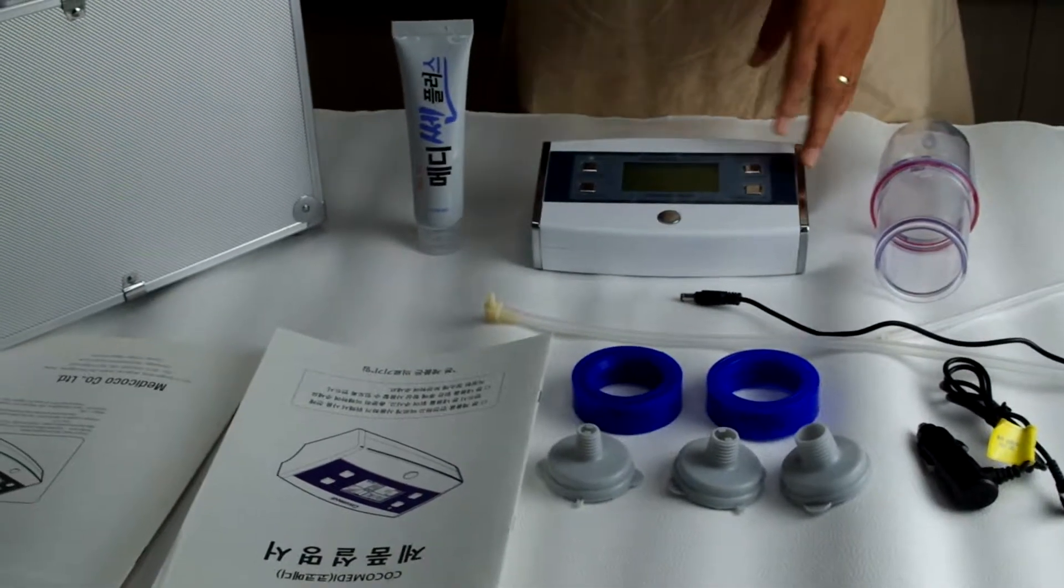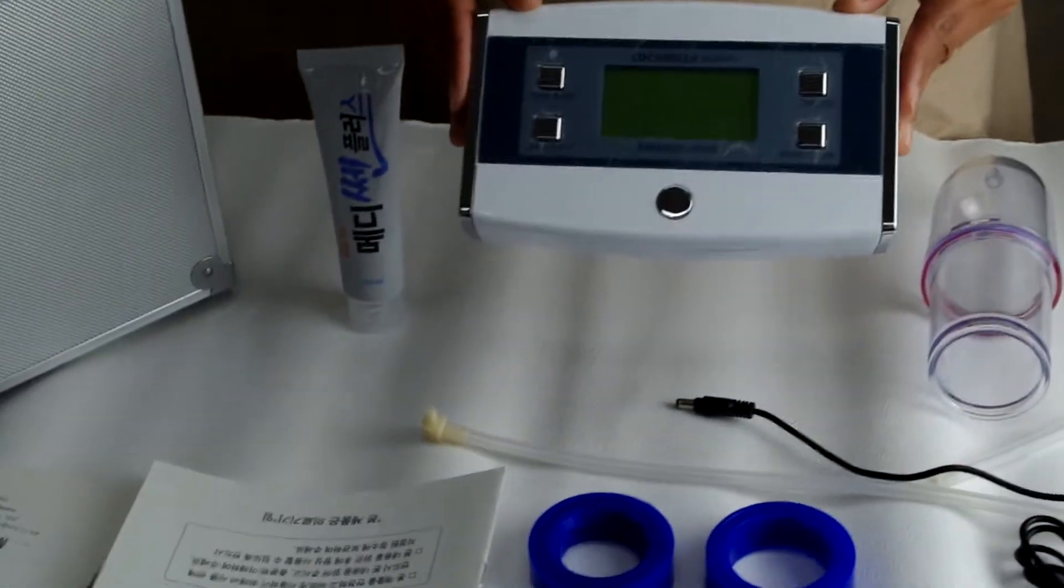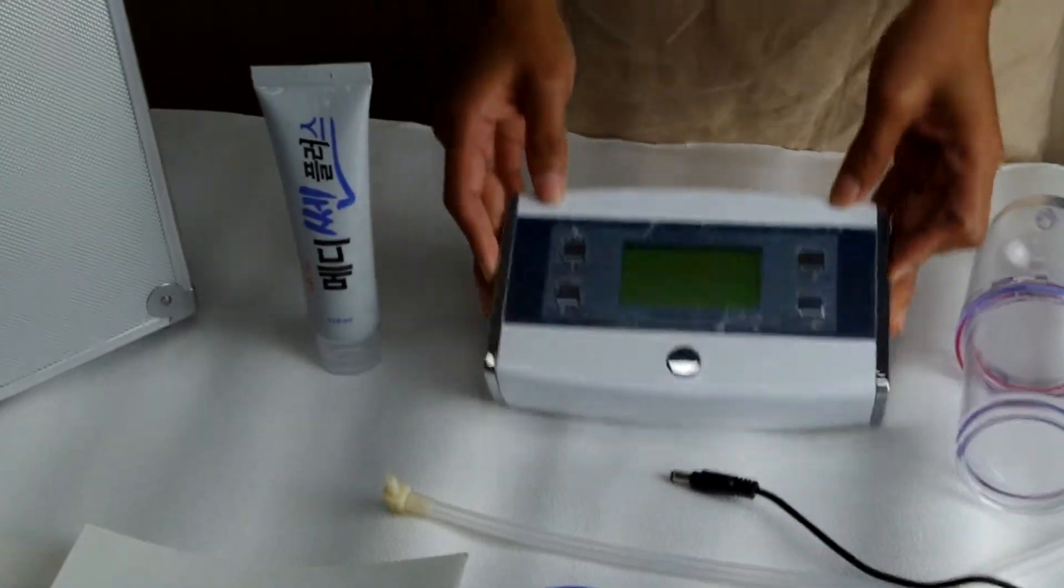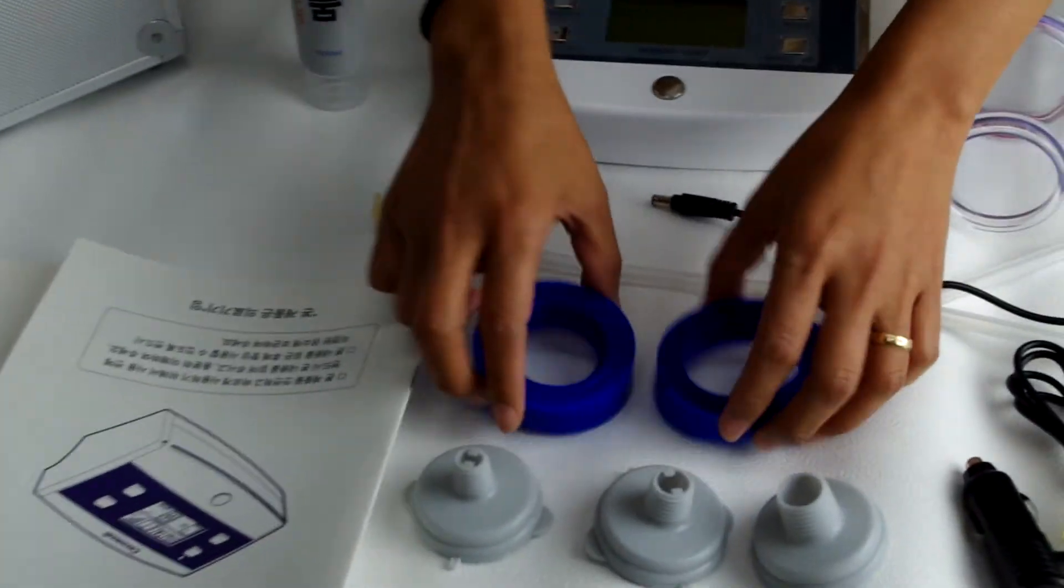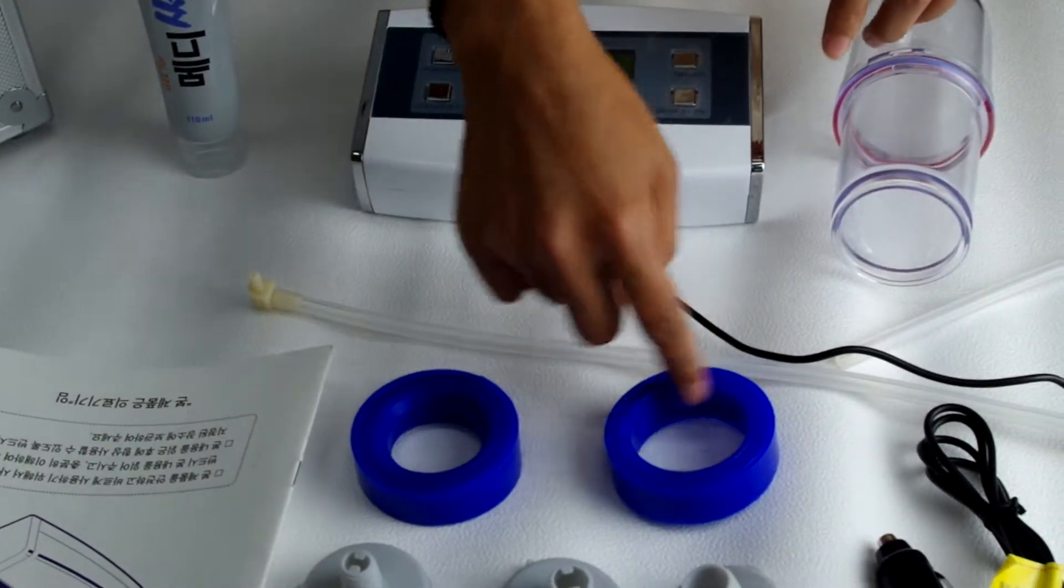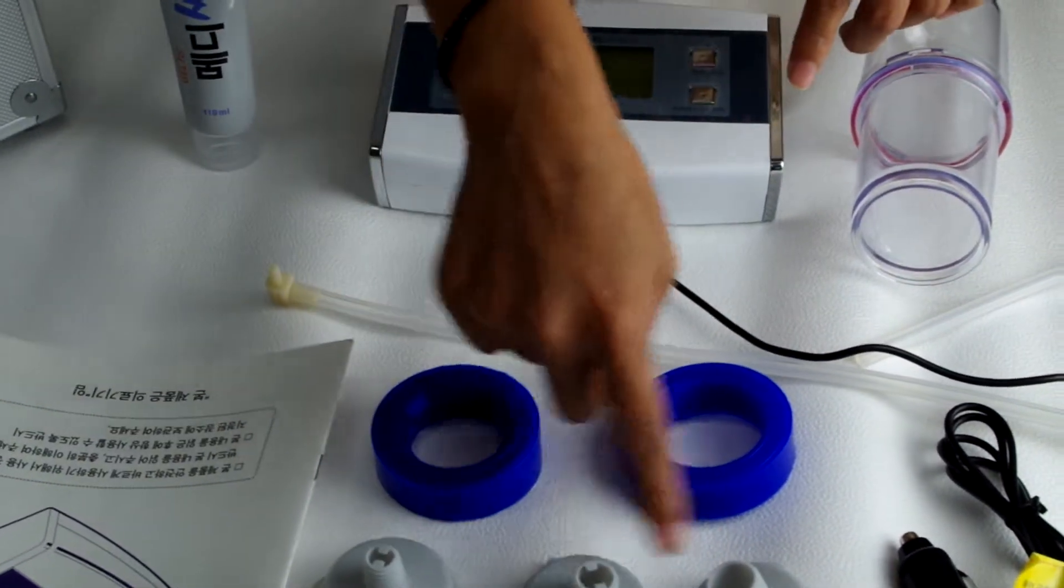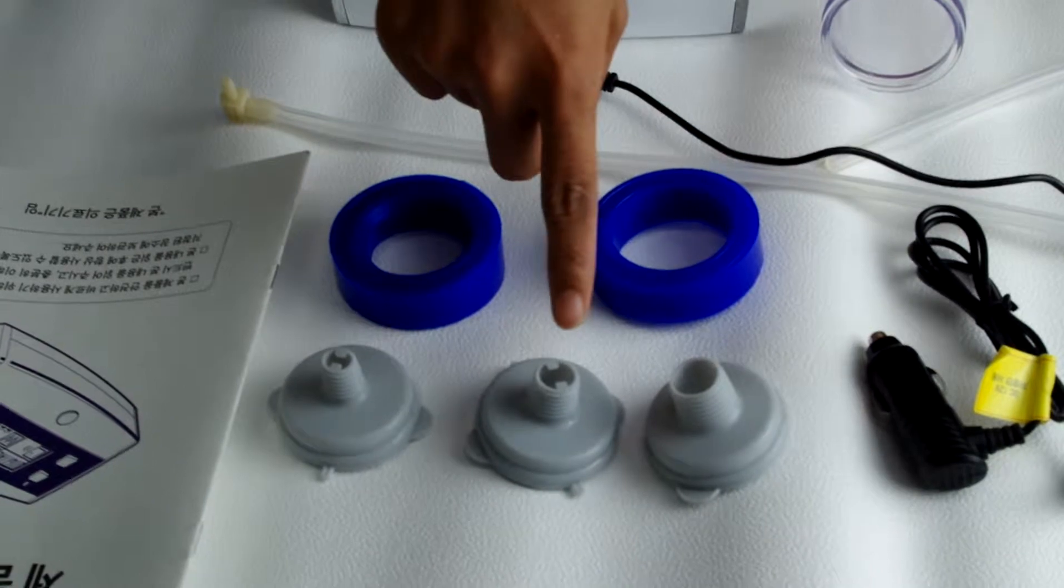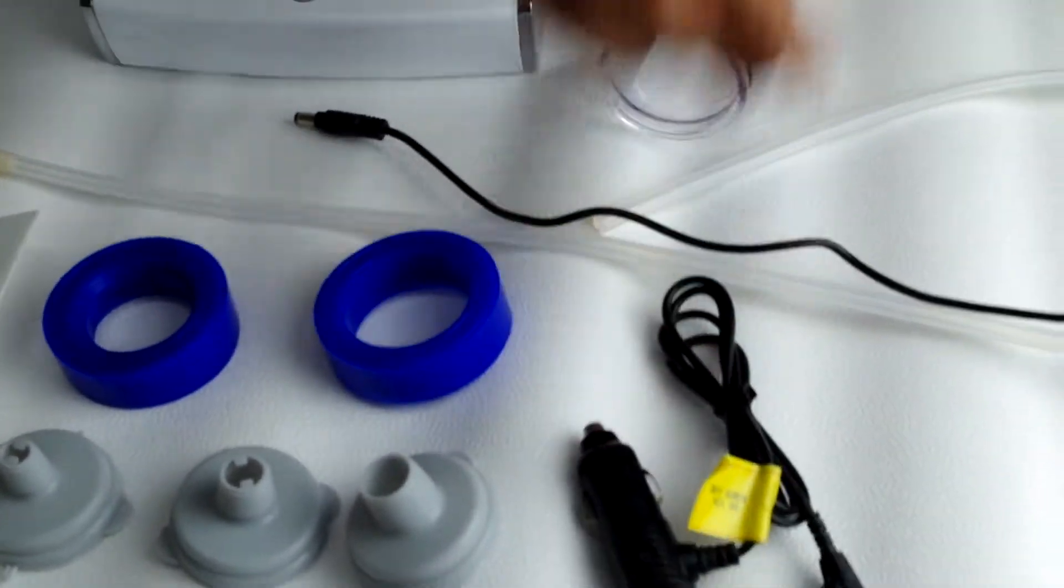These are the sets of Cocomedi product: the Cocomedi device, the automatic device, the two kinds of pressure band (the small size and the medium), the three kinds of protector (the small, the medium, and the large), and the car charger.